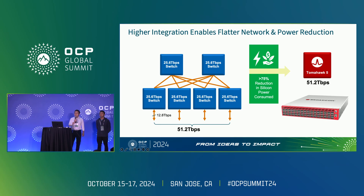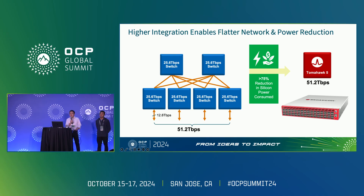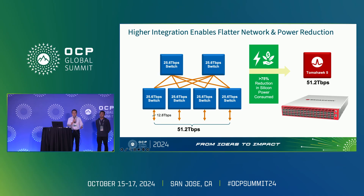As a silicon vendor, we believe there are multiple keys to enabling a compelling power solution. Number one is integration. A monolithic 51T switch is able to displace 6 25T switches while providing the same front-panel bandwidth — saving at least 75% power, not to mention additional savings from a flattened network, less cabling, and easier system design. The second is velocity, allowing us to always take advantage of the latest manufacturing and packaging technology. For example, in the past decade we've gone from the 640 gig Trident in 2010 to the 51T Tm5 in 2022, achieving more than 80x bandwidth increase and 95% improvement in power efficiency.